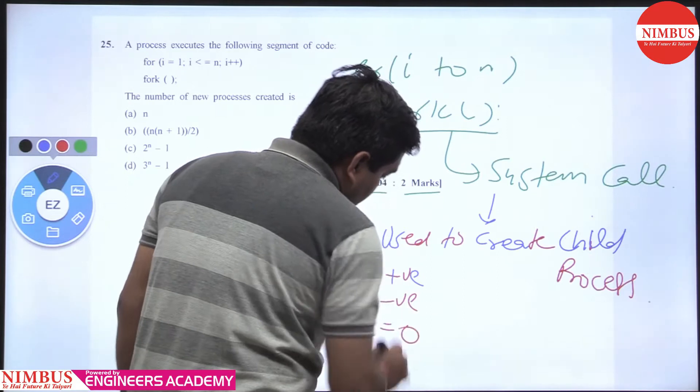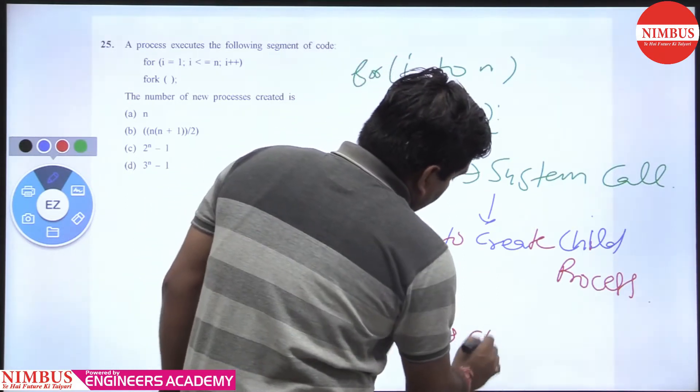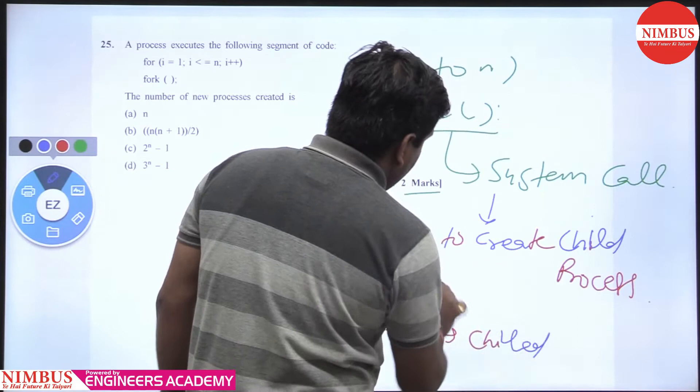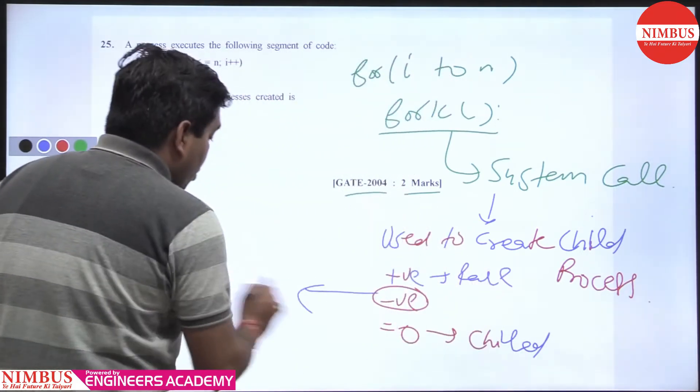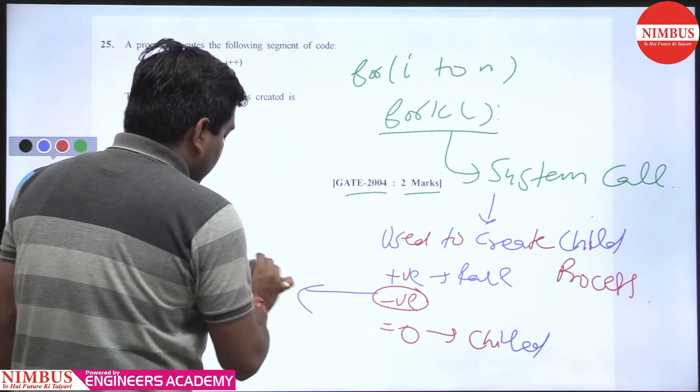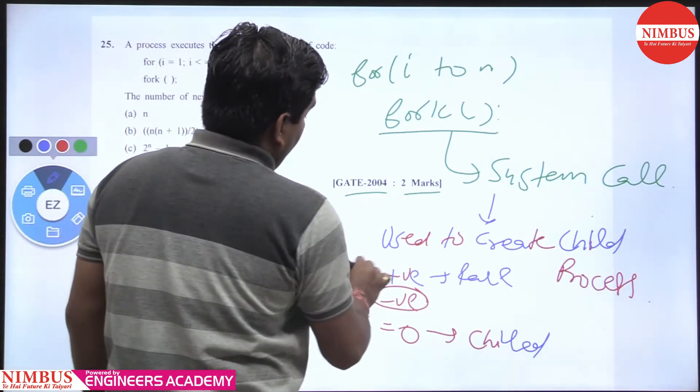Fork returns 0 to the newly created child process, returns a positive value to the parent process, and returns a negative value if fork creation was unsuccessful.